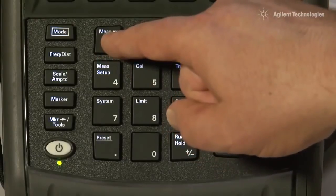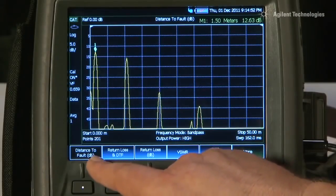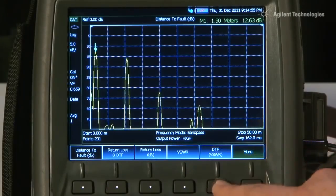Now, if you are more familiar with working in VSWR rather than return loss, it is very simple. For example, we just press the Measure button and instead of Distance to Fault in dB, I press Distance to Fault in VSWR.